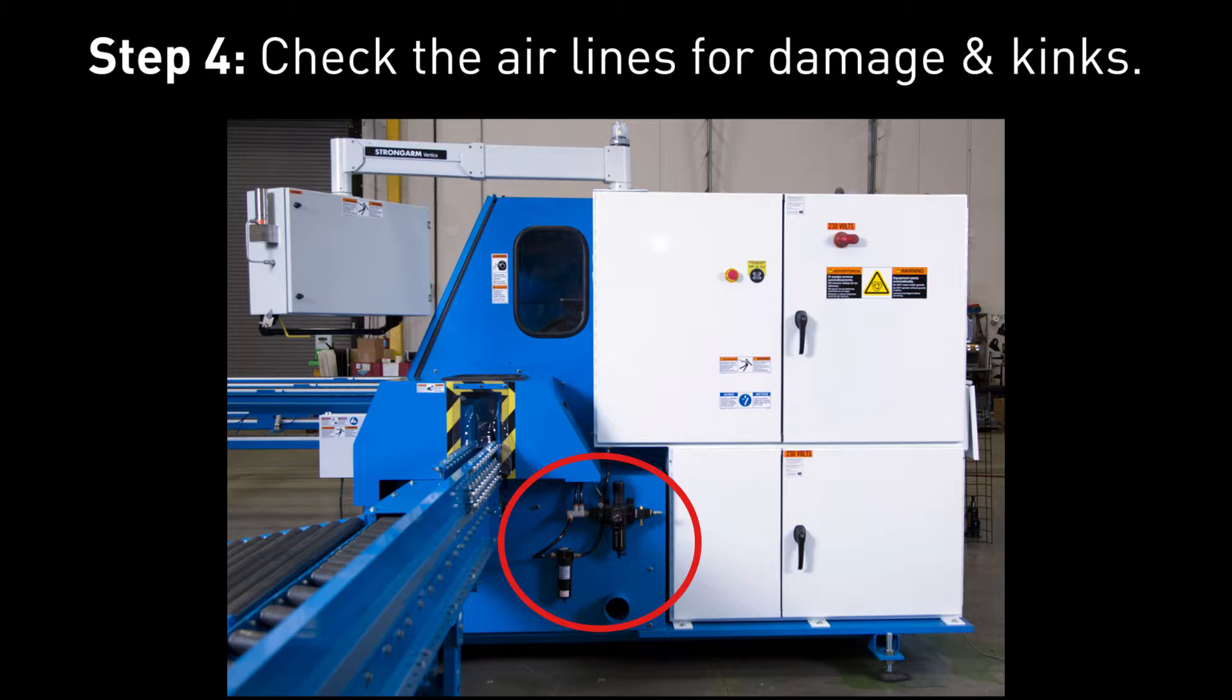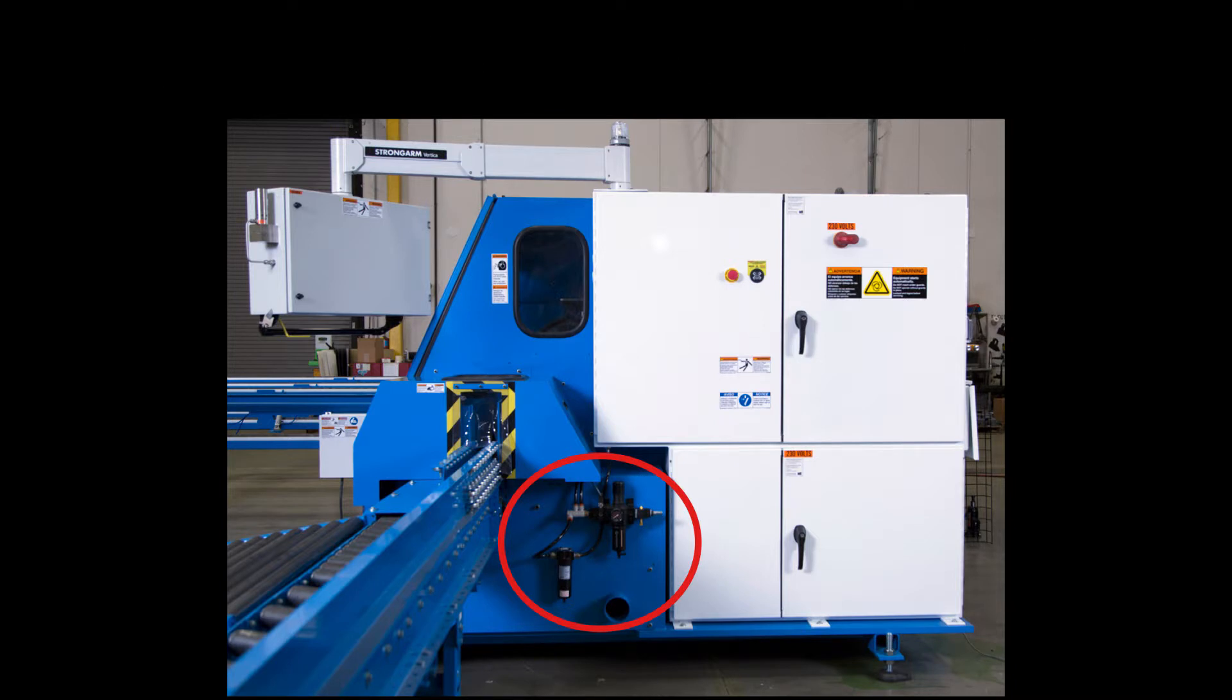Step four: while the saw is still locked out, follow the air lines from the main regulator on the side of the saw to the gripper clamp, looking for bends or kinks that could limit airflow. If nothing significant shows up, proceed to step five.